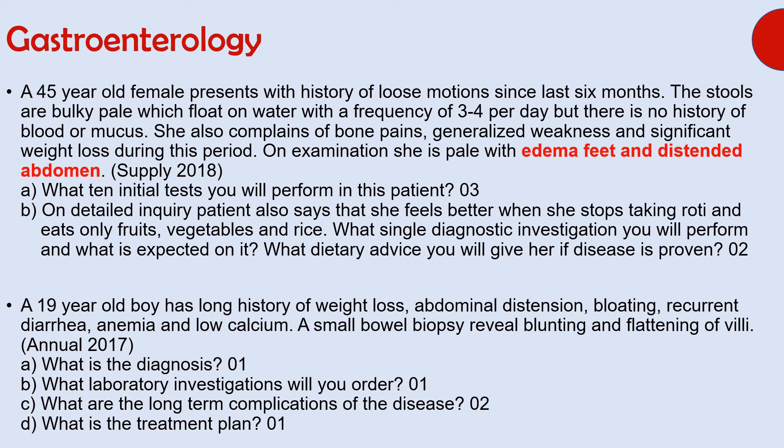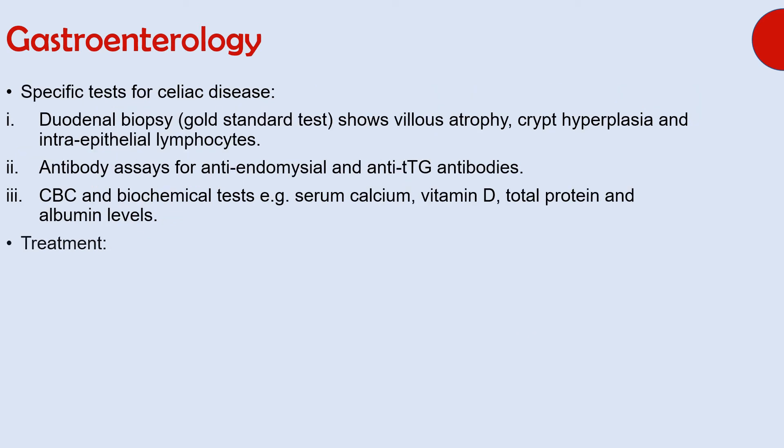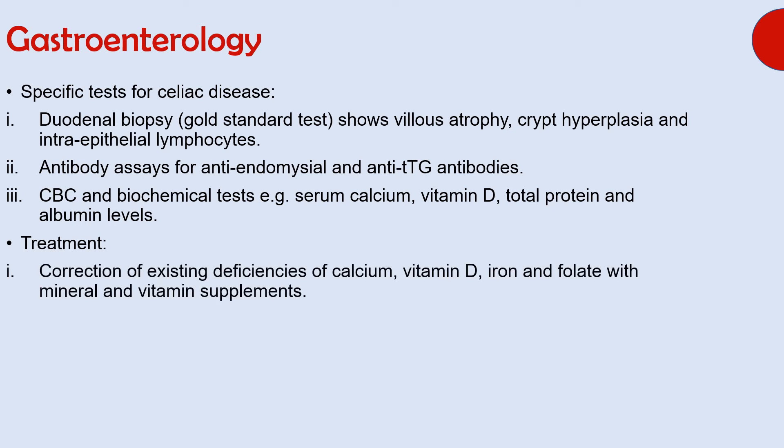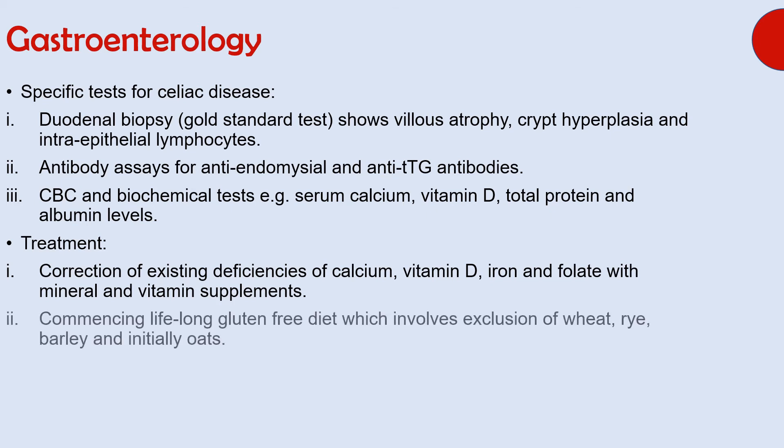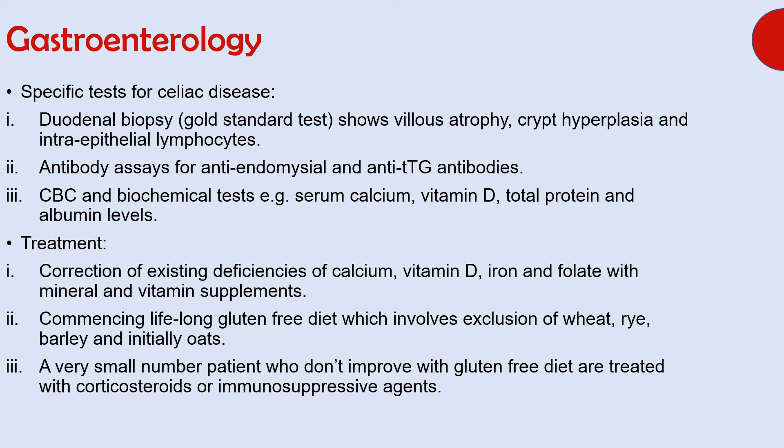Treatment of celiac disease involves correction of existing deficiencies of calcium, vitamin D, iron, and folate with mineral and vitamin supplements, and commencing a lifelong gluten-free diet — which involves exclusion of wheat, rye, barley, and initially oats. This dietary therapy is the mainstay of treatment. A very small number of patients who do not improve with the gluten-free diet are treated with corticosteroids or immunosuppressive agents.